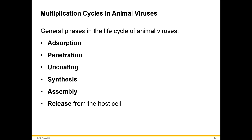Penetration is when the virus enters into the host cell. Uncoating is when the capsid deteriorates and goes away, leaving the genetic material. Synthesis is when you replicate the genetic material. Assembly is when you assemble new virions using the directions from the genetic material, creating viral proteins for the capsid and spikes. Released is when the virus is released from the host cell.